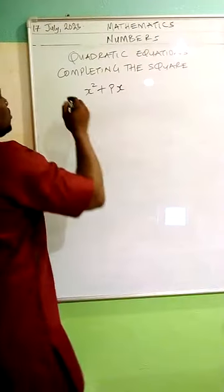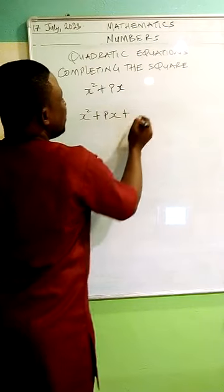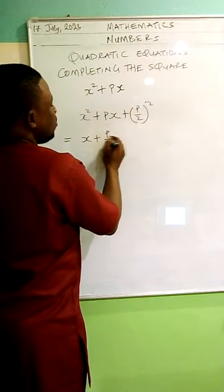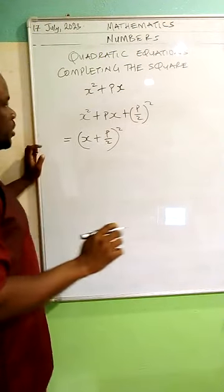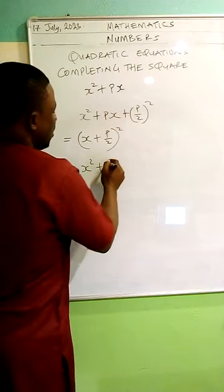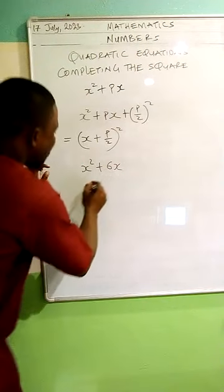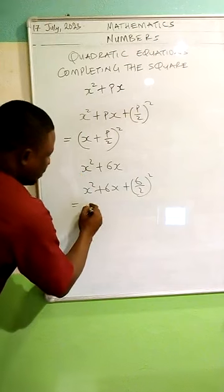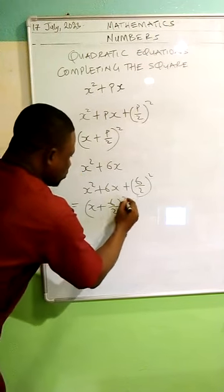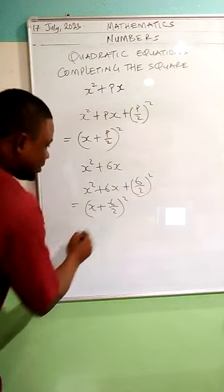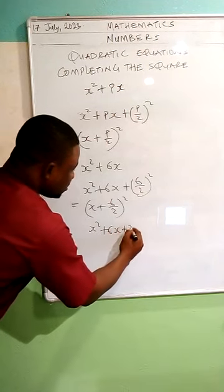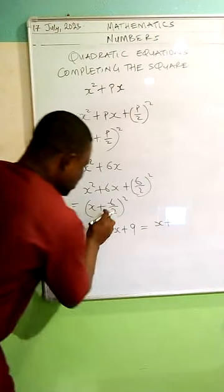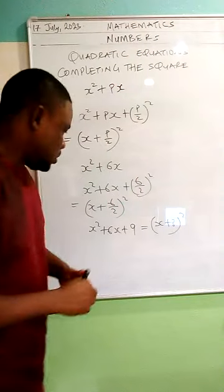Let's do this again. To make x squared plus px a perfect square, I add p over 2 all squared, and I get x plus p over 2, all squared. For example, if I have x squared plus 6x and I want to make it a perfect square, I add 6 over 2 all squared. That's 3 squared, which is 9. And what I get is x plus 3, all squared.